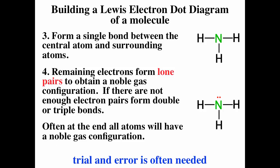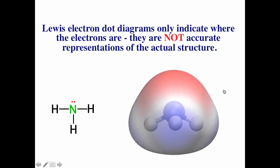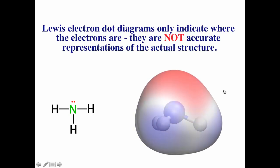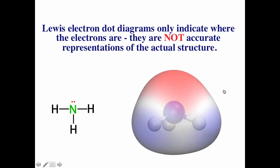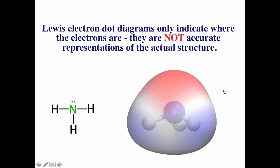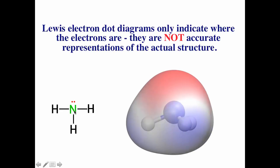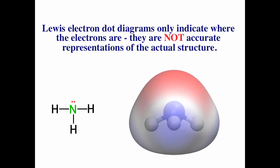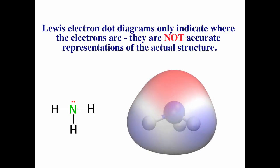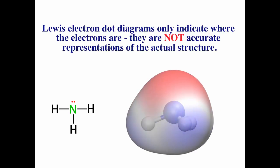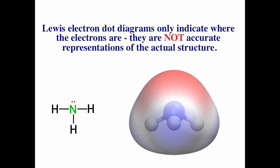Please remember that trial and error is often needed. If you're not sure, just try something and then evaluate it. Lewis electron dot diagrams do not accurately represent the three-dimensional structure — they just help us understand where the electrons are, whether they're bonding or non-bonding. From the Lewis diagram it looks like the bond angle should be 90 degrees, but from the model we see the bond angle is more like 109.5 degrees. Lewis diagrams are just two-dimensional representations.